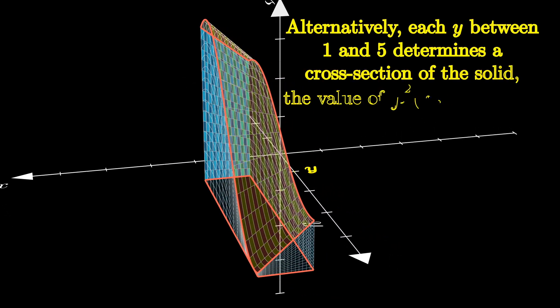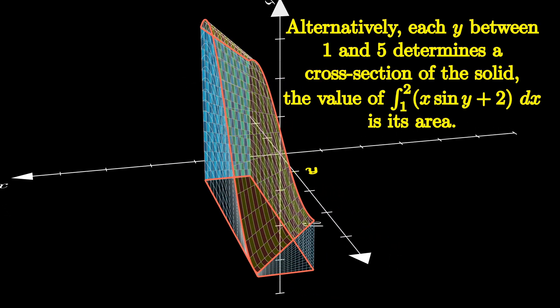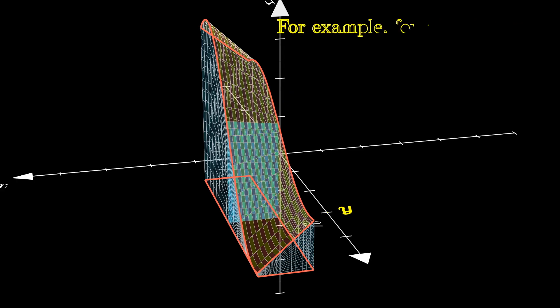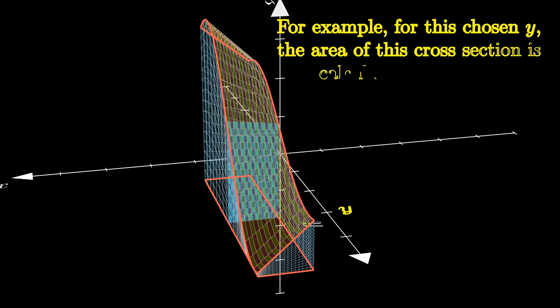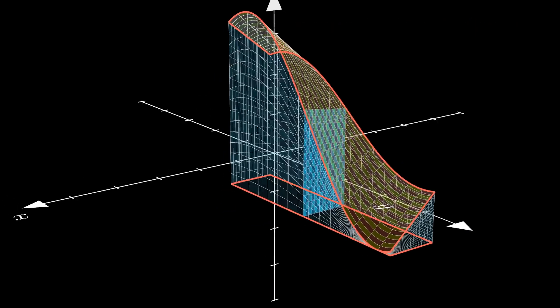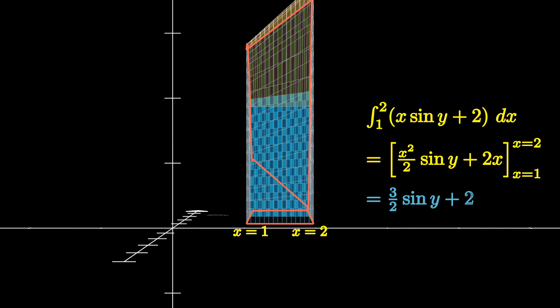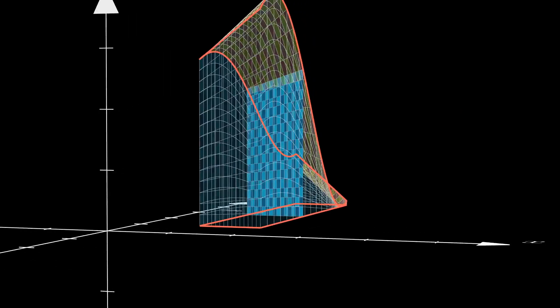Alternatively, each Y between 1 and 5 determines a cross-section of the solid also. Fixing Y, the integral of our surface's expression with respect to X gives the area of this cross-section. We'll calculate that now — we just apply our typical Calculus 1 rules of integration on the variable X. The resulting area is an expression only depending on Y, which makes sense because Y determined the cross-section we're looking at.